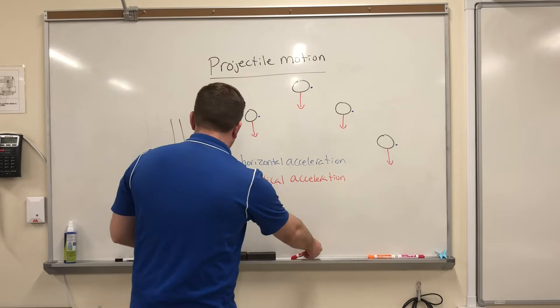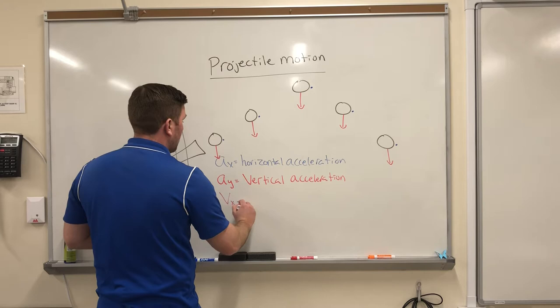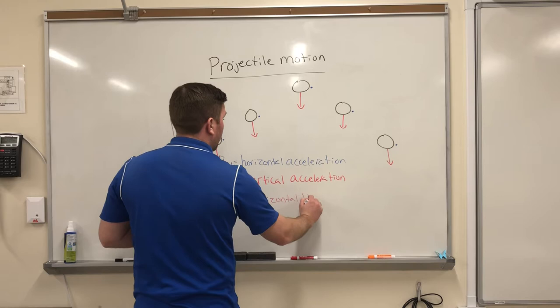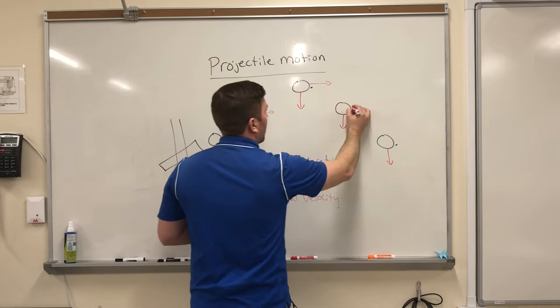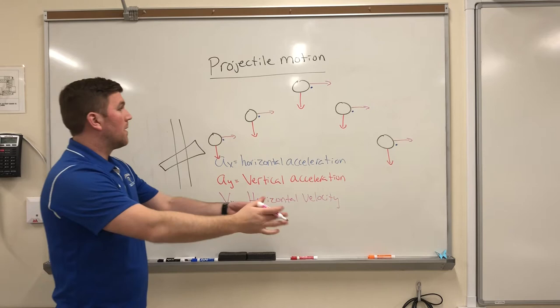We also have velocities. So horizontal velocity. Horizontally, I have no acceleration. It's clearly moving in this direction. So I have a horizontal velocity that's greater than zero, and it's the same the entire way. So it's always moving in that direction with the same velocity.